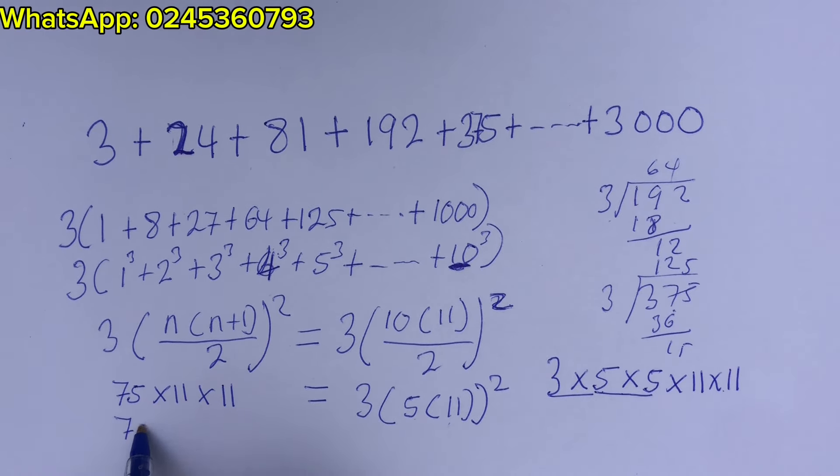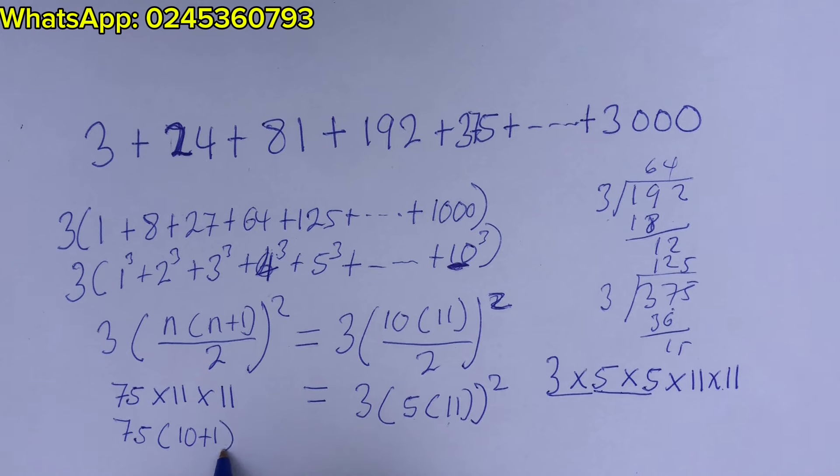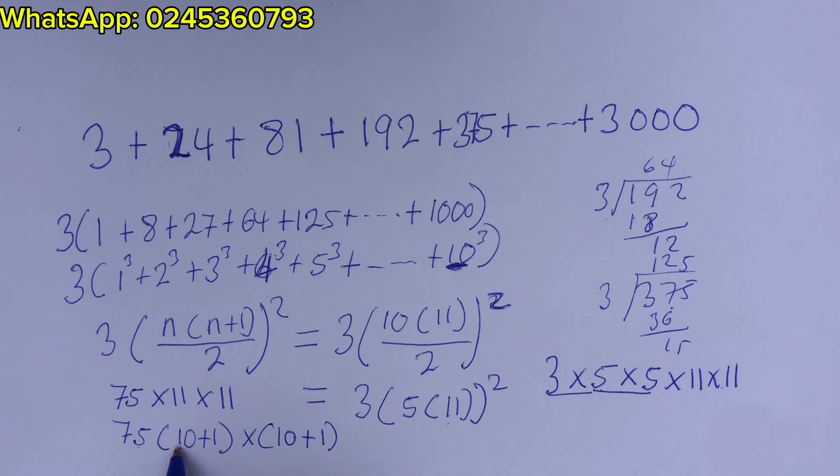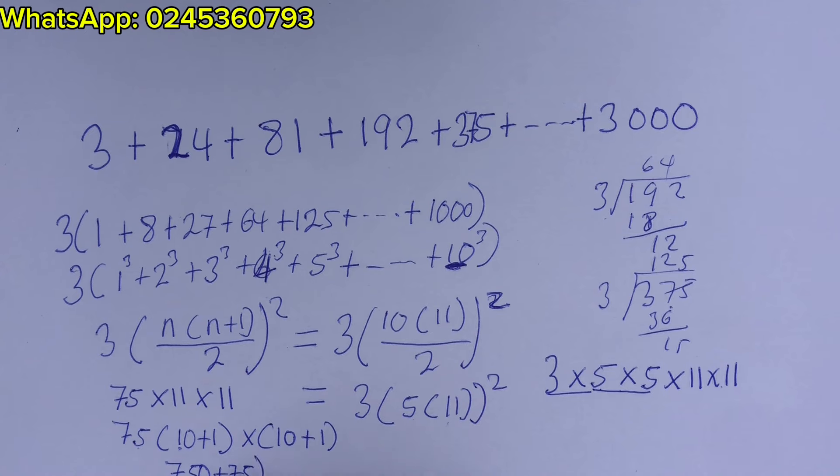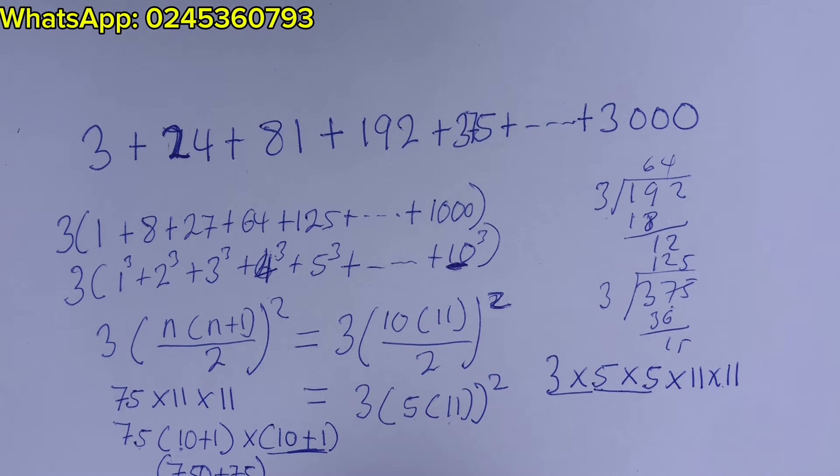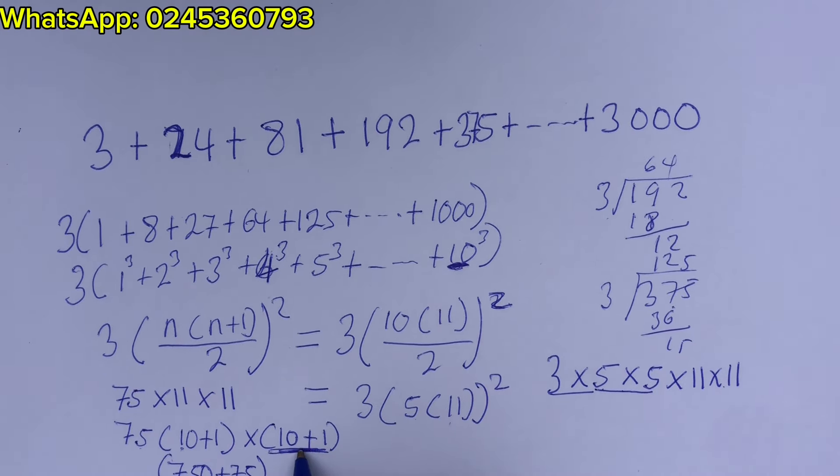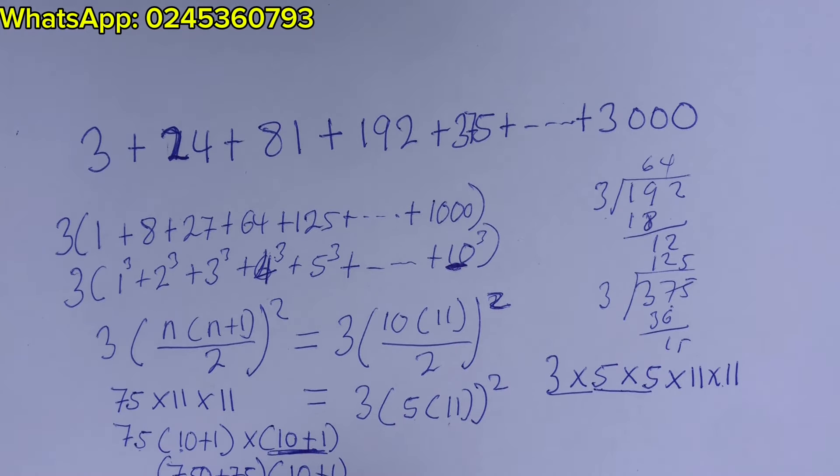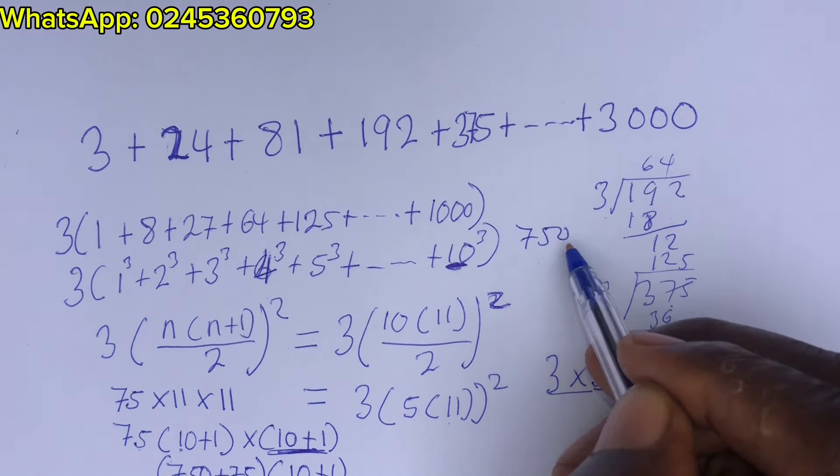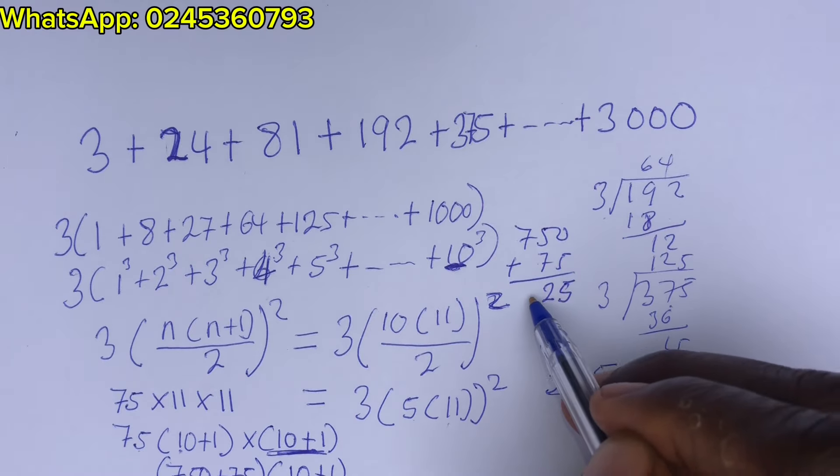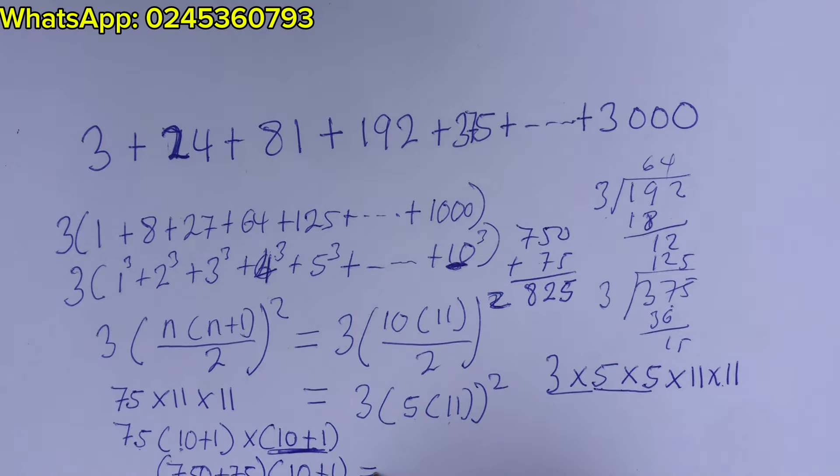So this is the same as 75 times 10 plus 1 times another 10 plus 1. So 75 times 10 is 750 plus 75. Let's maintain this one into 10 plus 1.